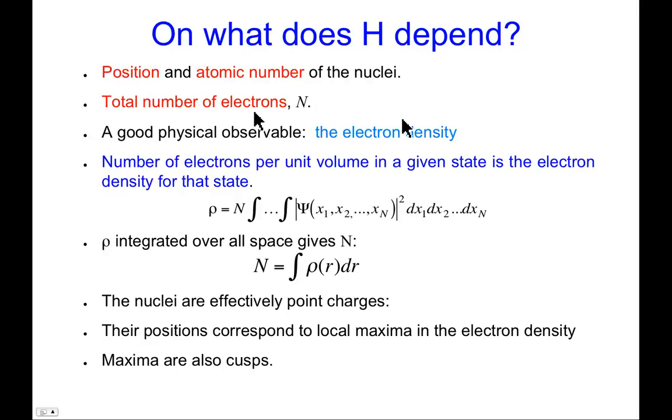So we've talked about the electron density being a good physical observable. What is the electron density? So that's defined to be the number of electrons per unit volume in a given electronic state. That defines the electron density for that state. So this integral multiplied times the number of electrons over some arbitrary volume element will allow you to determine the density within that volume element.